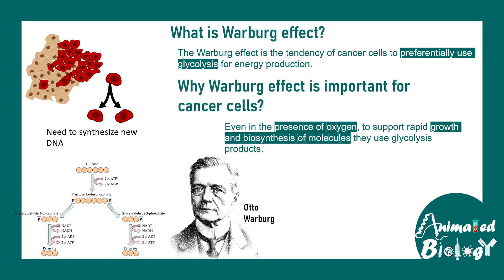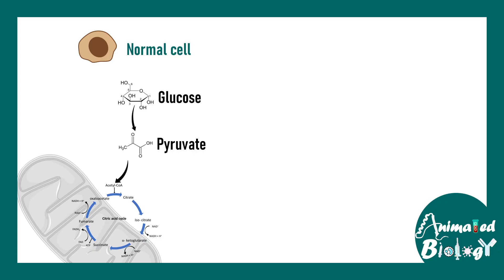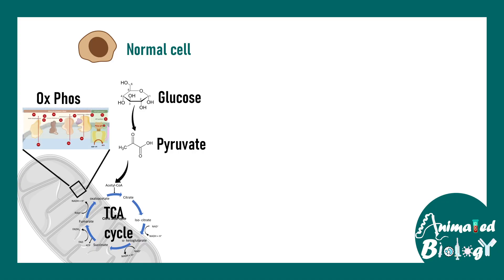Instead, cancer cells utilize glycolysis to make several intermediates useful for their growth and survival. Normal cells generally utilize glucose: glucose gets converted into pyruvate, pyruvate eventually forms acetyl-CoA, which feeds into the TCA cycle, and after the TCA cycle there is oxidative phosphorylation, which generates a lot of ATP. Very little lactate is produced in this situation.